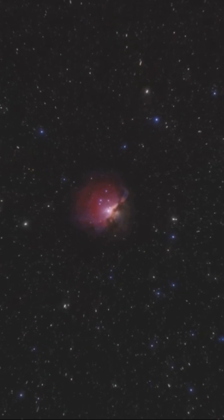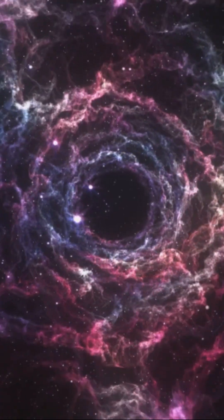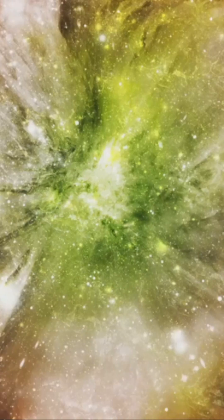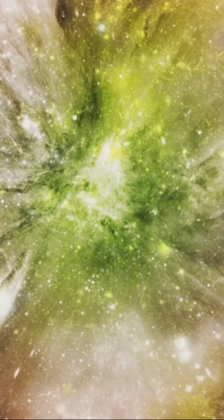The Ring Nebula, located in the constellation Lyra, is another well-known planetary nebula. Some nebulas, like the Triffid Nebula, exhibit multiple types of nebulosity within the same structure.